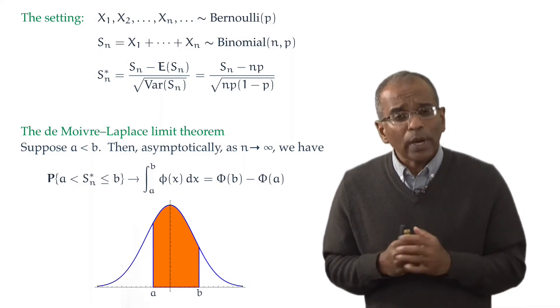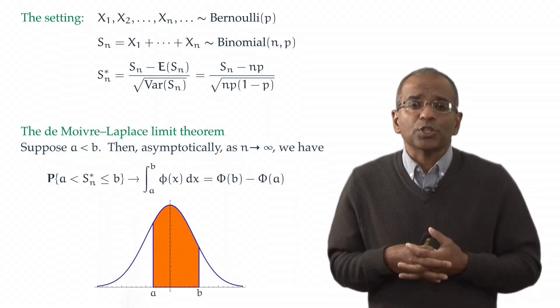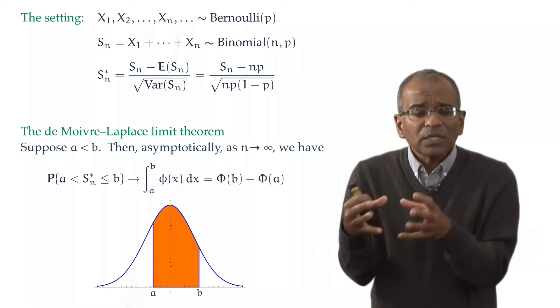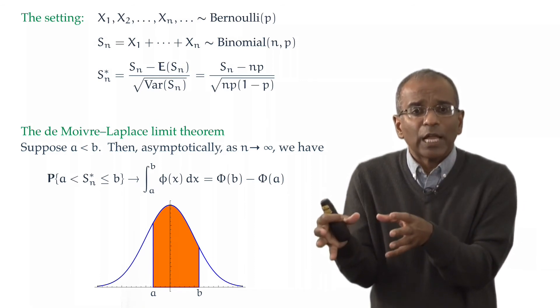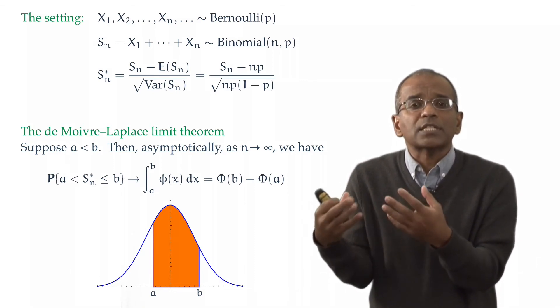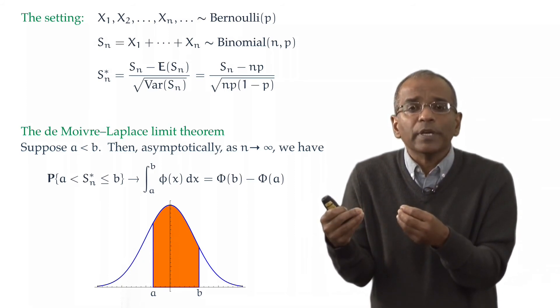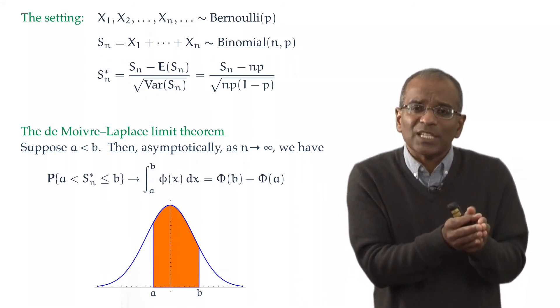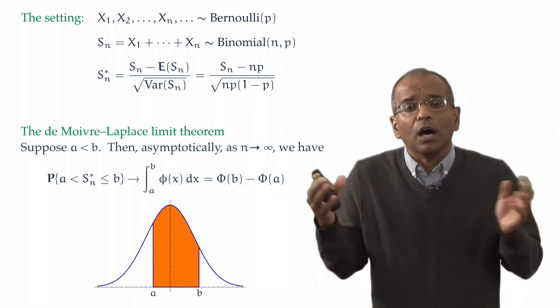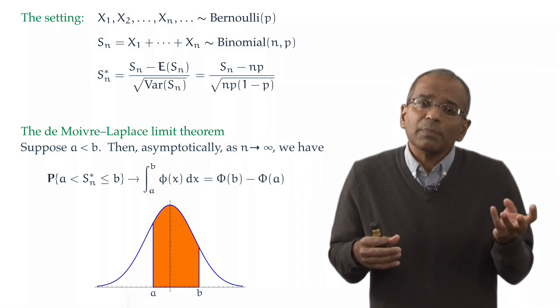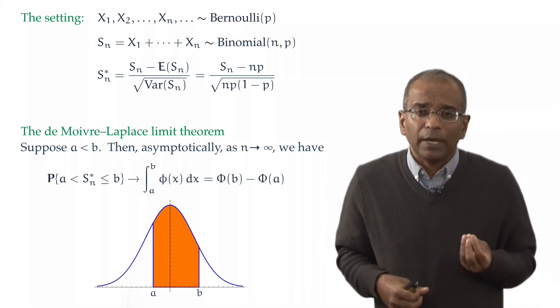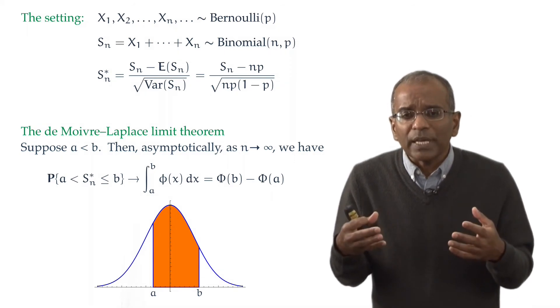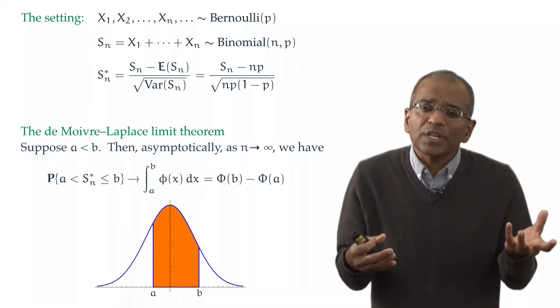A second question that might come across a student's mind is, well, this is not completely satisfactory perhaps because on the left is a probability I would like to evaluate, a probability involving the accumulated successes in the tosses of a coin, a probability involving a binomial distribution. On the right, I've got an asymptotic statement which says that if the number of trials becomes large, then we get a behavior of a certain kind, a limiting behavior. A question naturally then is, well, how large does n have to be before this approximation is good?